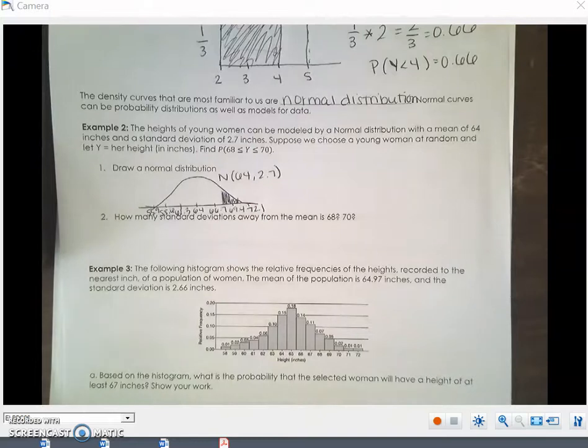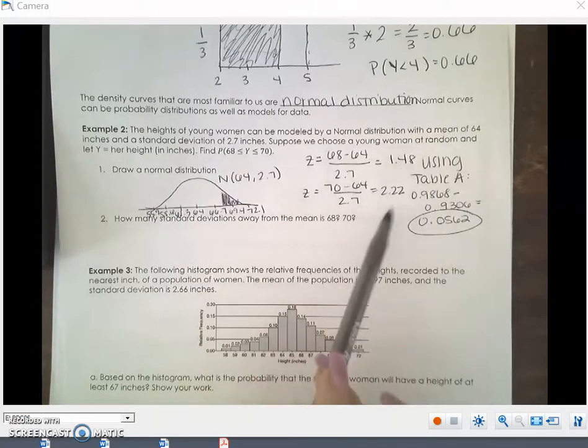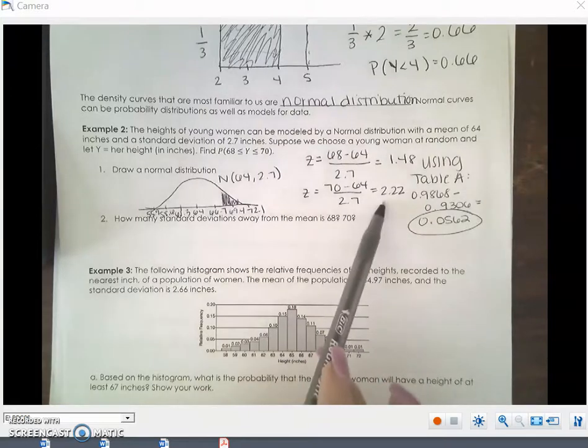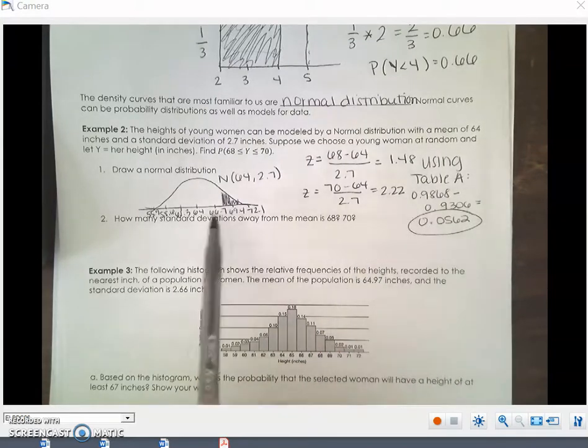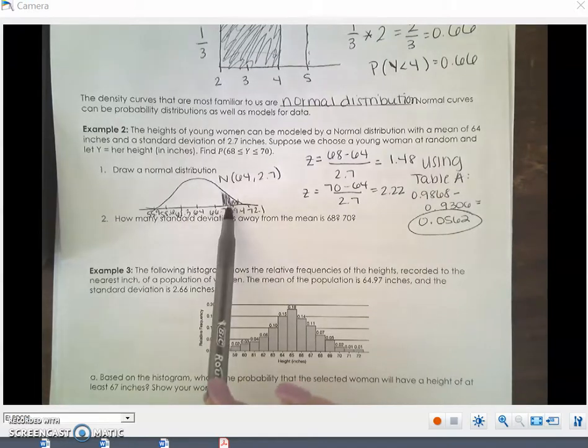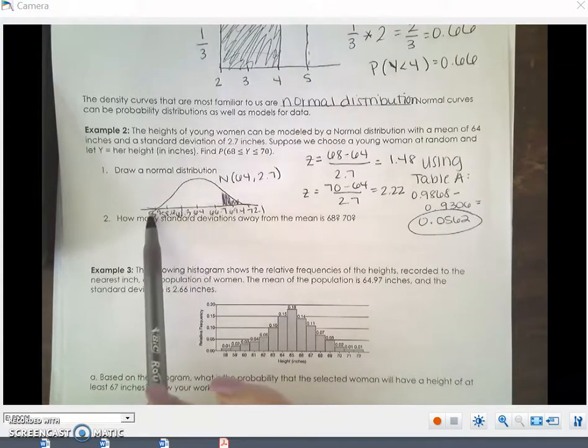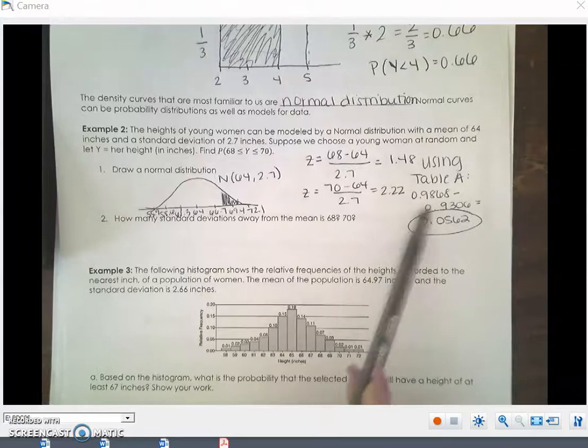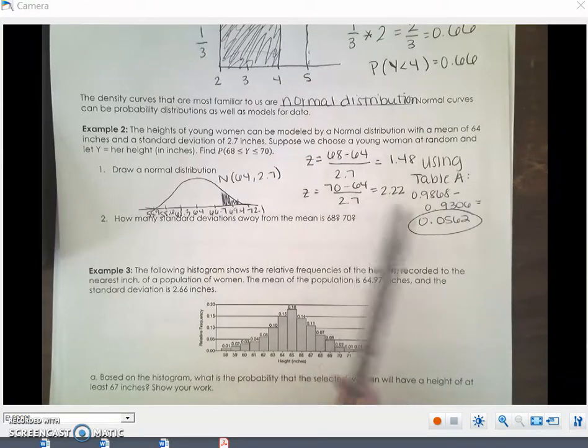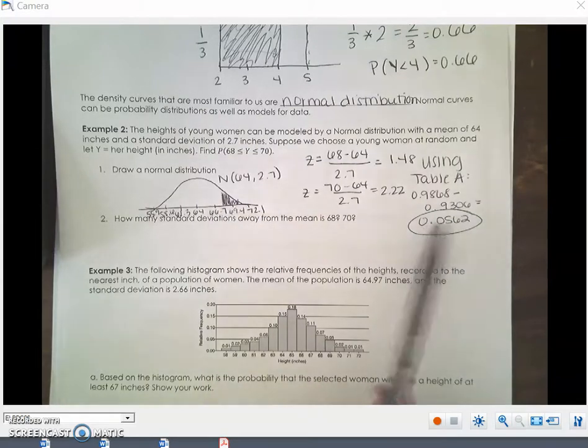To get that, we have to do the z-scores. So for sake of time, I am going to do those calculations here and then replay the video. Remember z-score is value minus mean over standard deviation. I got 1.48 and 2.22. Then I went to table A and got those values. For 68, it was 1.48 standard deviations. So the area below the curve to the left was 0.9868. The area under the curve was 0.9306. Here, when I subtracted those, I got 0.0562.